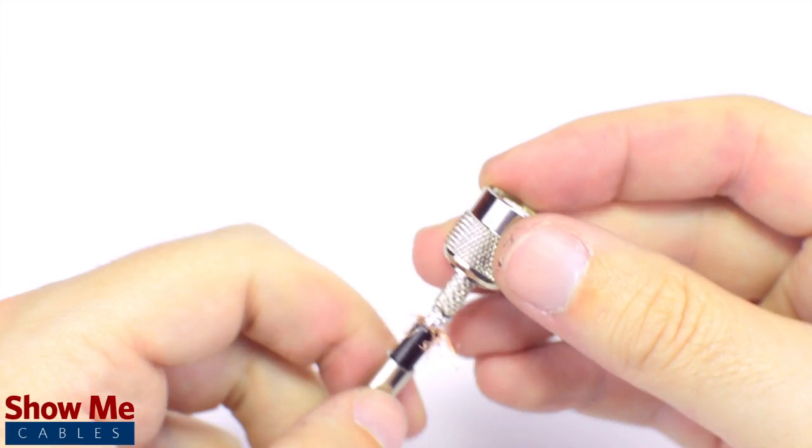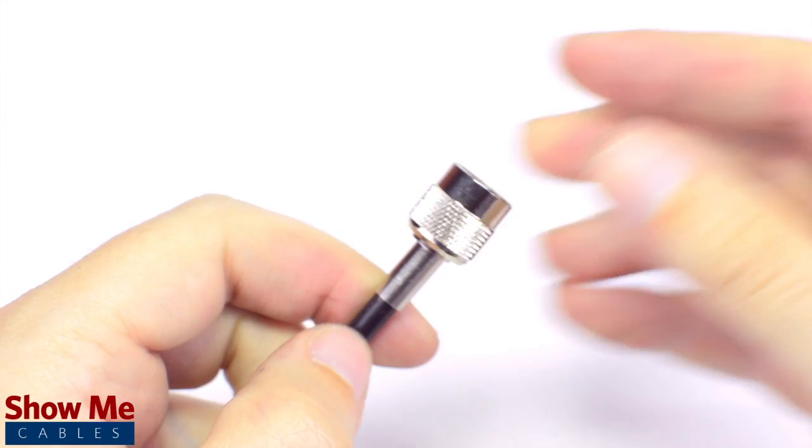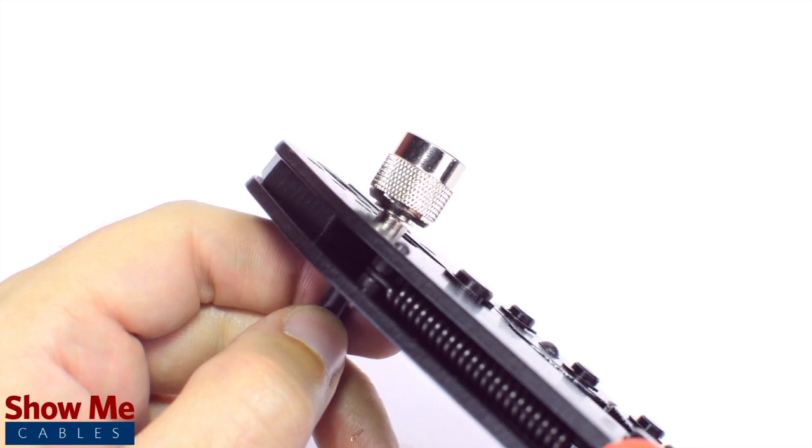Then slide the ferrule up to the base of the connector, folding the shield with it. Crimp the ferrule onto the outer jacket to complete termination.